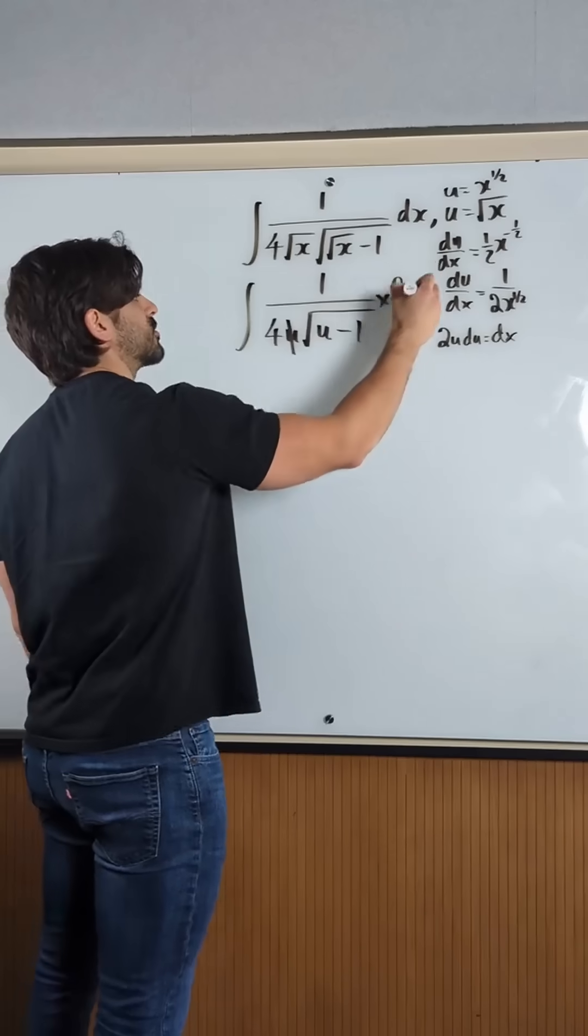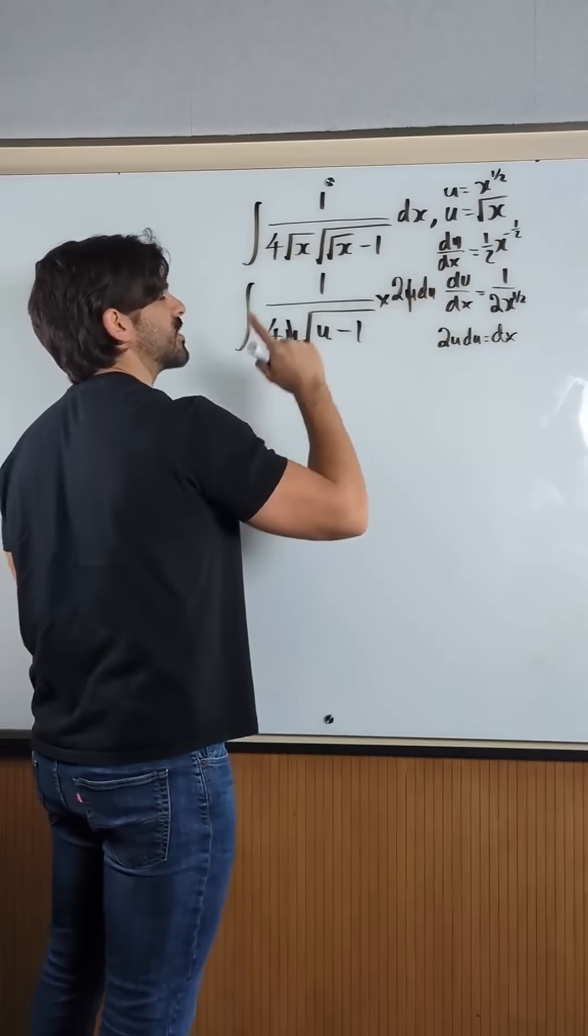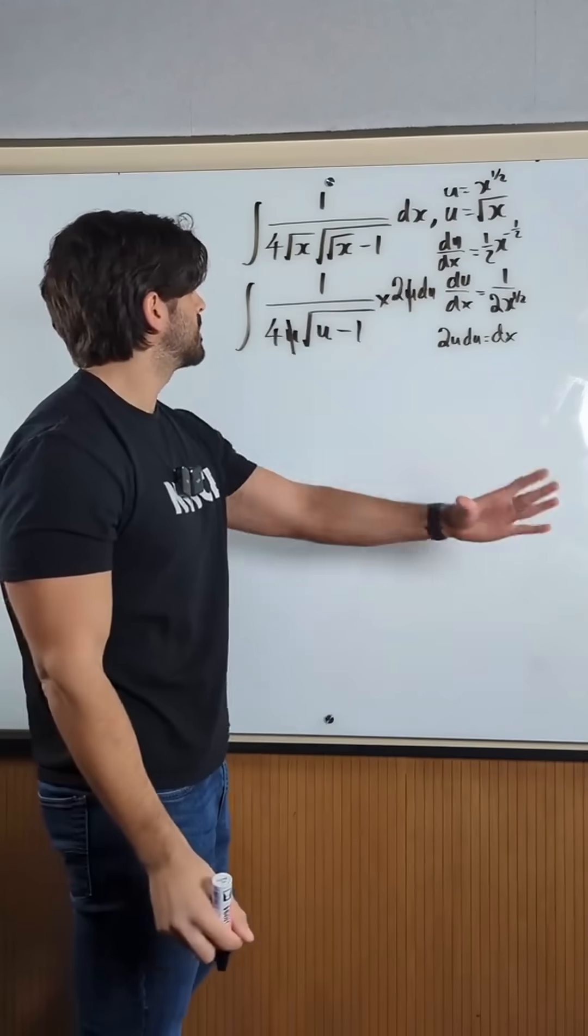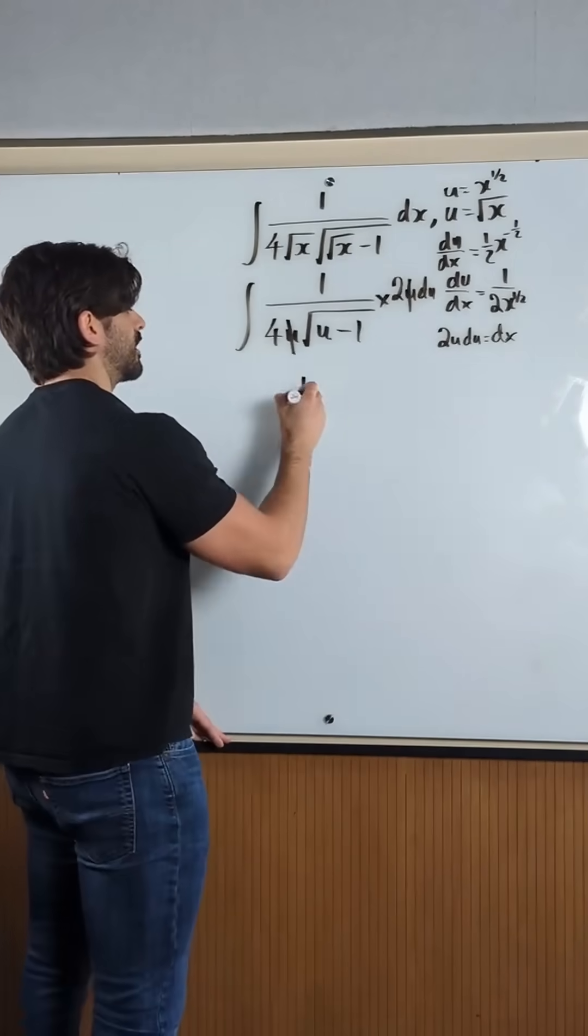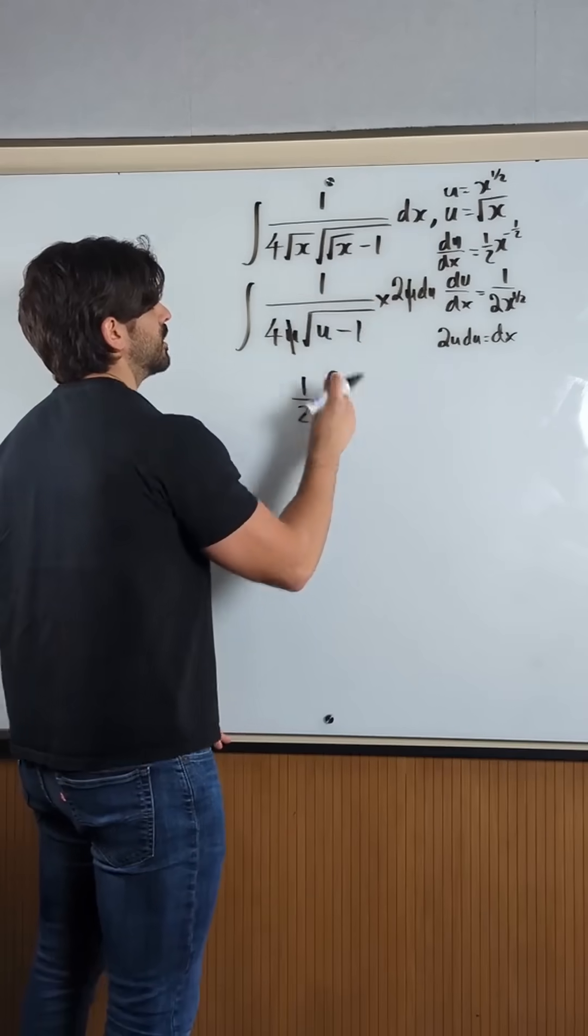Okay, the u's cancel. 2 divided by 4 is a half. Now that half, take it outside of the integral. We get a half integral of this. How do we integrate this?